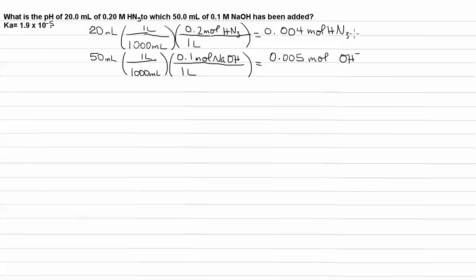Now, if we look at these two things, it becomes clear that we have an excess of strong base hydroxide. This is after the equivalence point. At the equivalence point, our moles of acid are equal to our moles of base. Here, we have more base. We are after the equivalence point.